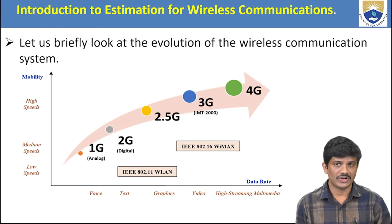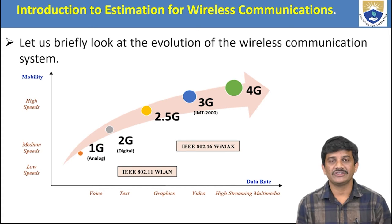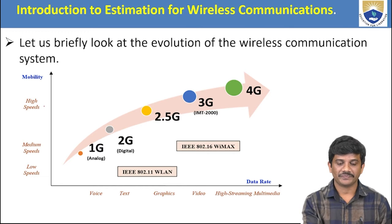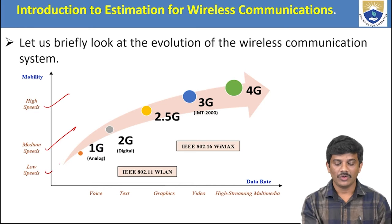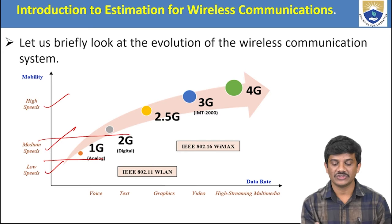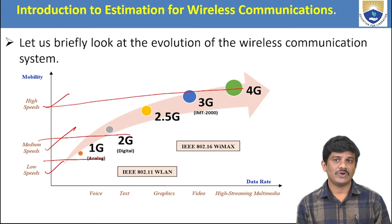Earlier we had 1G, then 2G, 2.5G, 3G, and 4G. Nowadays we are entering into 5G as well. These are the rapid changes across generations. Coming to the speed of communication: 1G covers low speeds, 2G is medium speed, and 4G offers high-speed data. In 1G and 2G, only voice communication was possible.